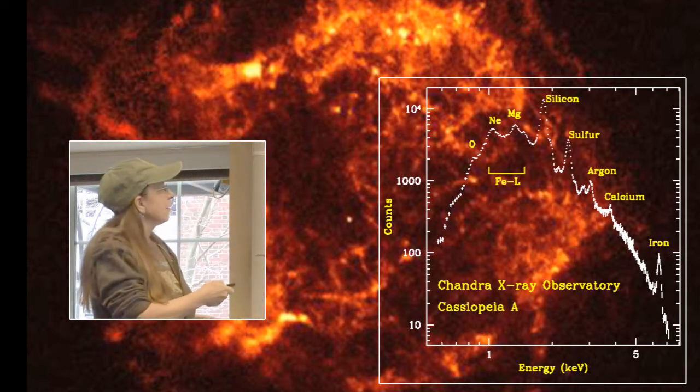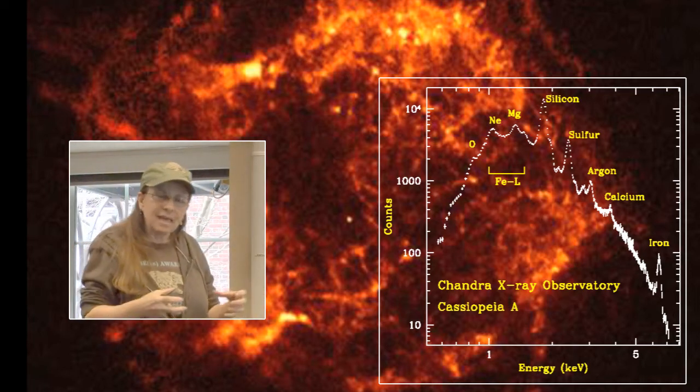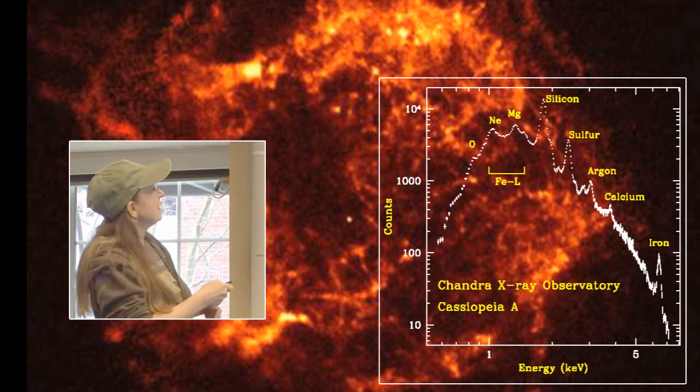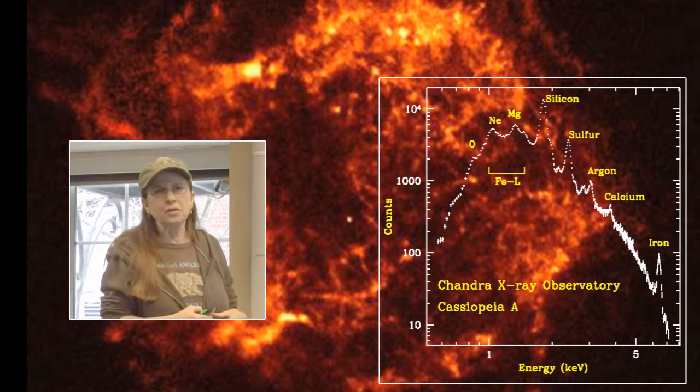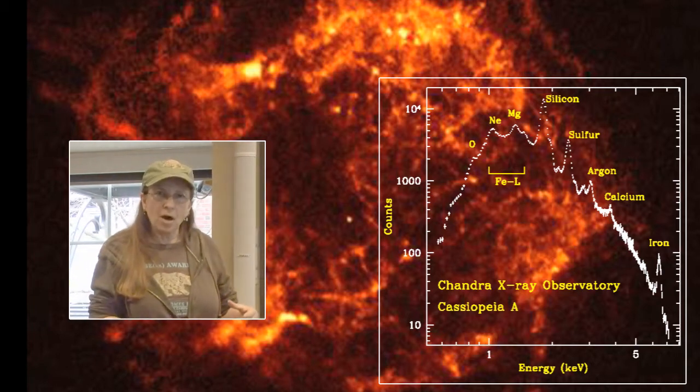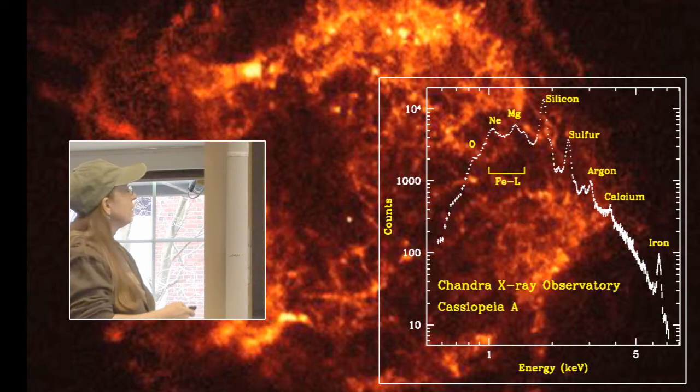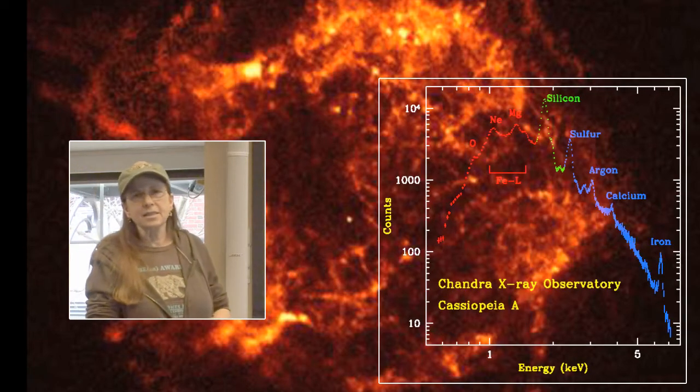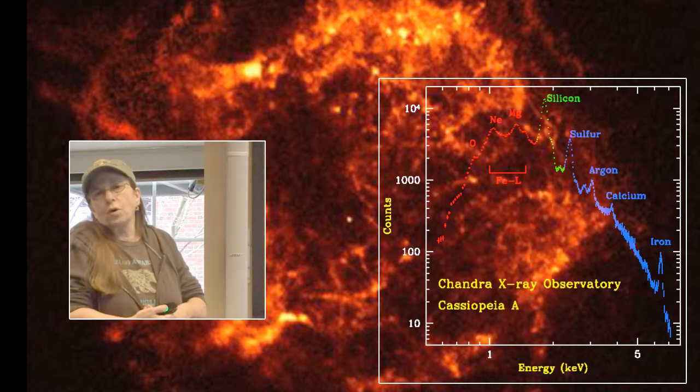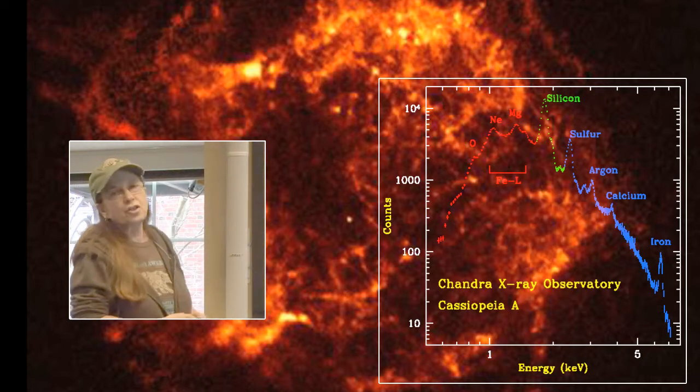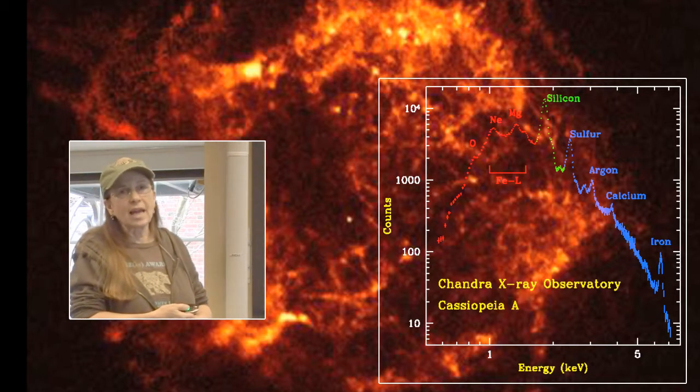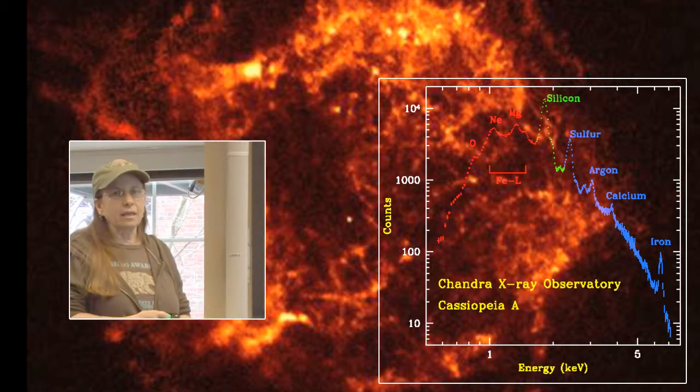One would expect that if iron was produced last, that would be the closest to the center of the remnant. Since oxygen and neon were produced the earliest, they would be all towards the outer part of the remnant. If you colorize - this is a normal colorization scheme for the Chandra mission - the low energy X-rays are colorized red, the medium are green, and the high energy are blue.